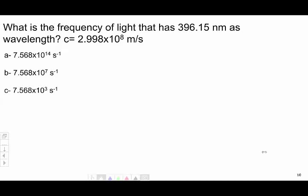Let's do some examples. What is the frequency of light that has 396.15 nanometers as wavelength? Wavelength equals c over frequency. Frequency equals c over lambda. The speed of light in vacuum is given in the question.